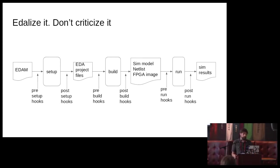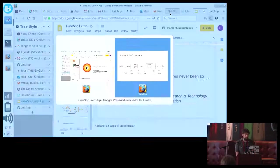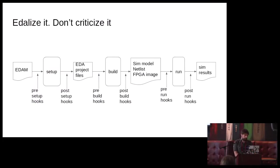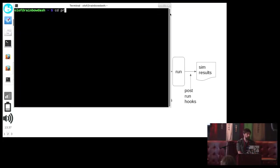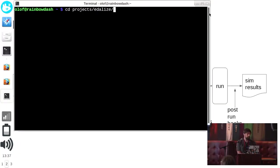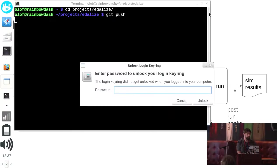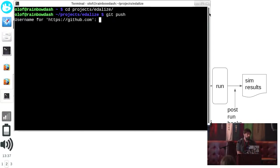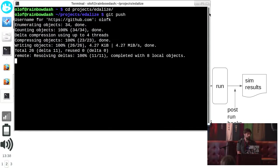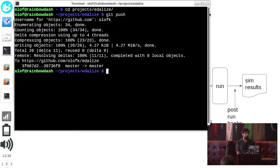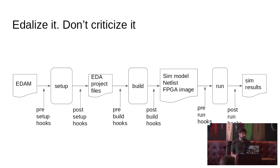FUSUC currently has 15 backends for different tools. The latest one is a tool called AscentLint from RealIntent — this is the third linting tool supported.